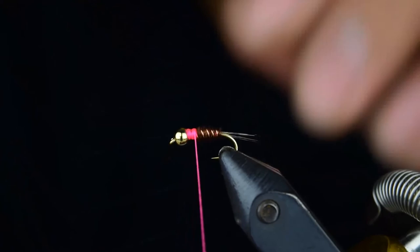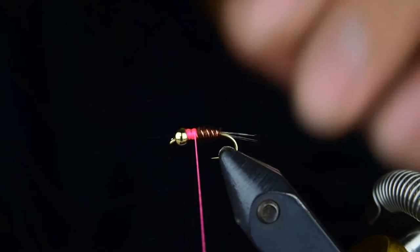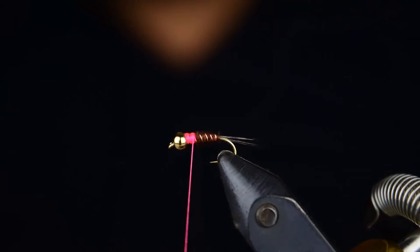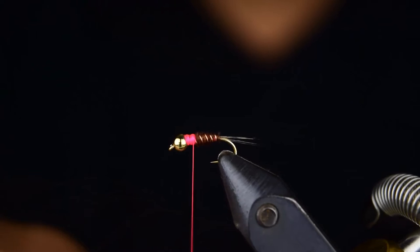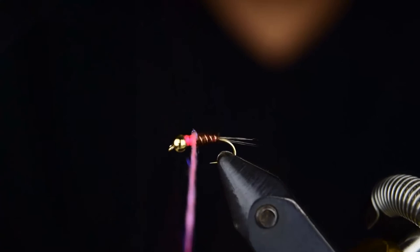We're going to wrap back a little bit to right about here. We're going to go to our ice dub. We're going to get a little pinch of dubbing, not much. You don't need too much with this dubbing. You could do this in a bunch of different colors. We just chose to do pink today because pink works really well for us. We're going to go ahead and create a nice little ball right in front of that bead.